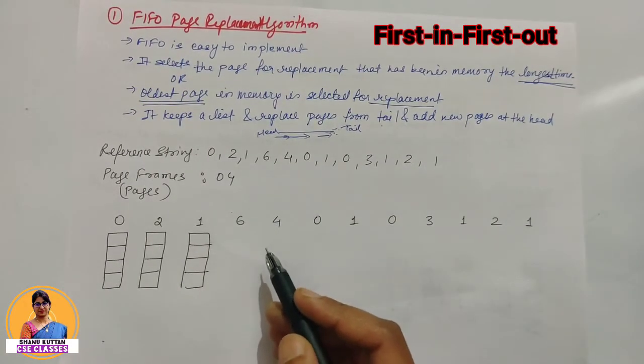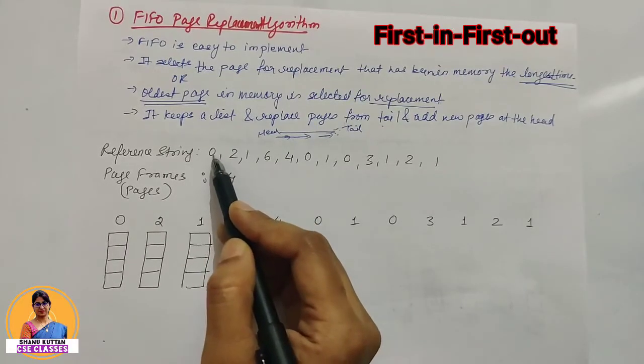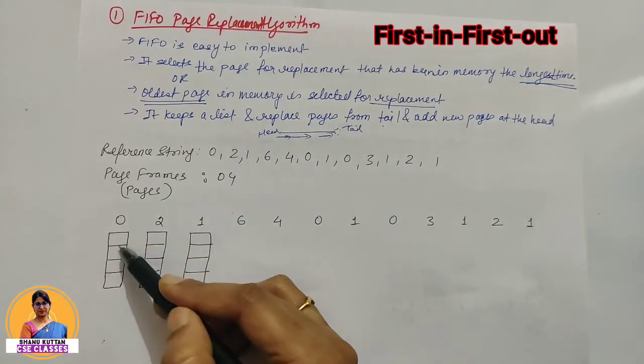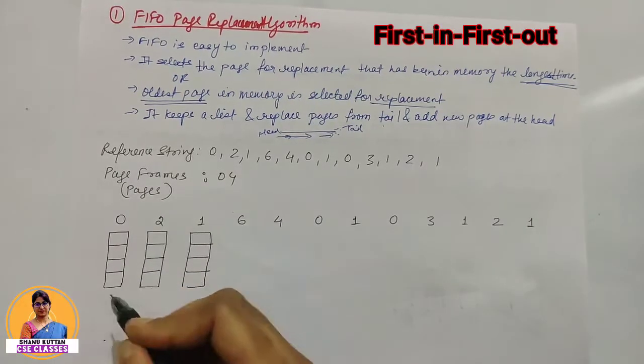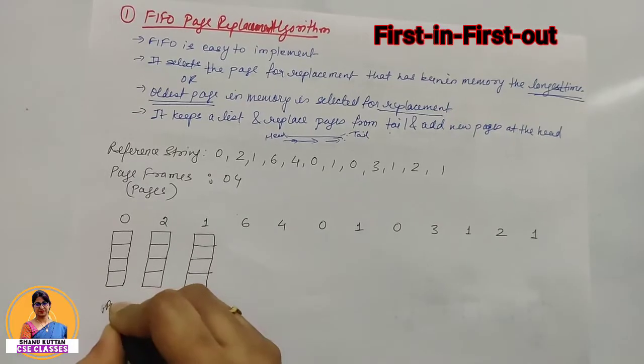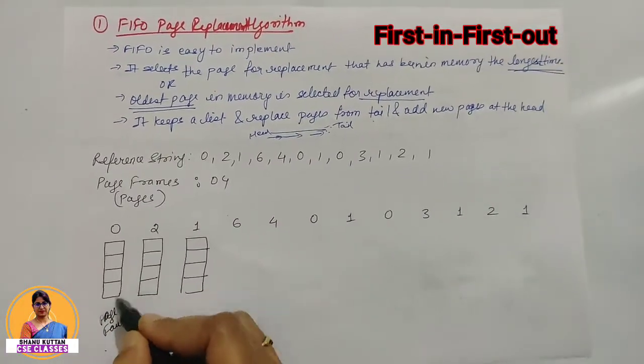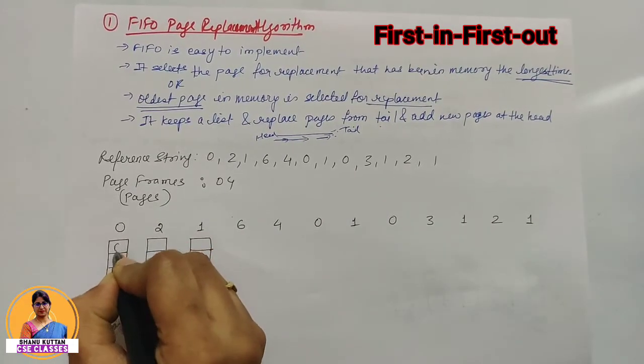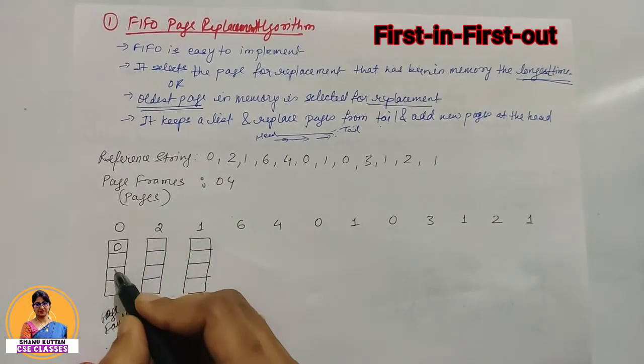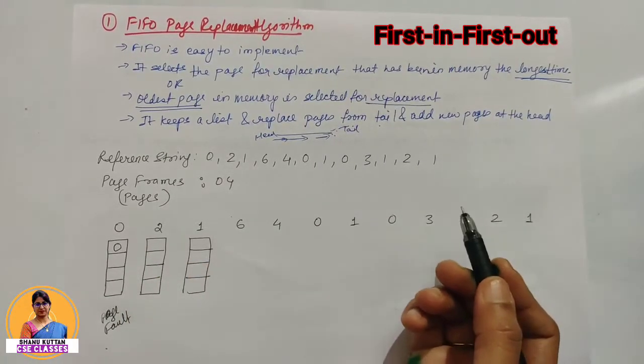Now let's solve this. First, if page 0 you want to access it, initially there is nothing stored here. So we have page fault because page 0 is not present in the memory. We will store it here because the CPU, before we access it in the main memory, if the pages don't get it then where is it? In the hard disk.